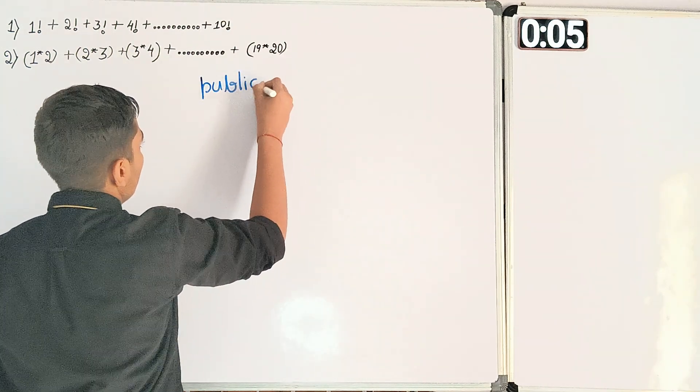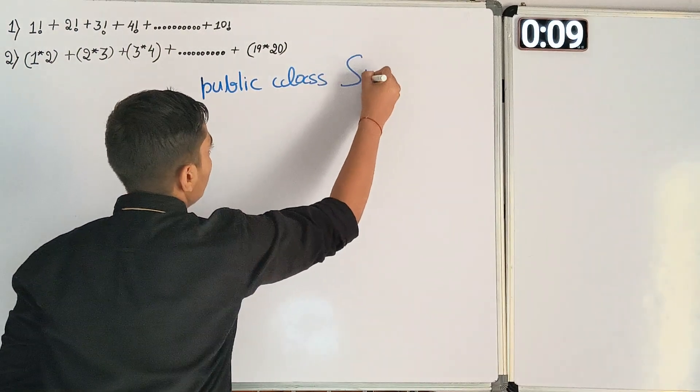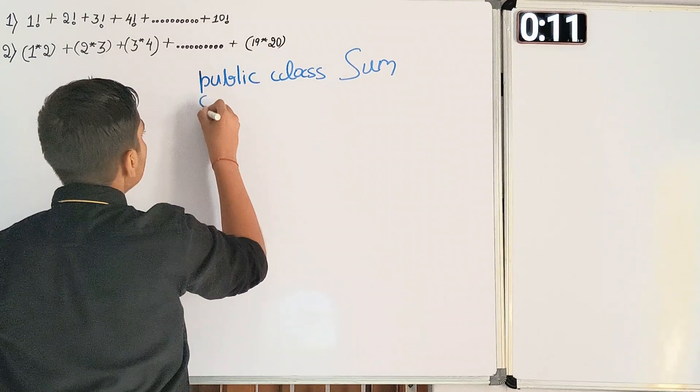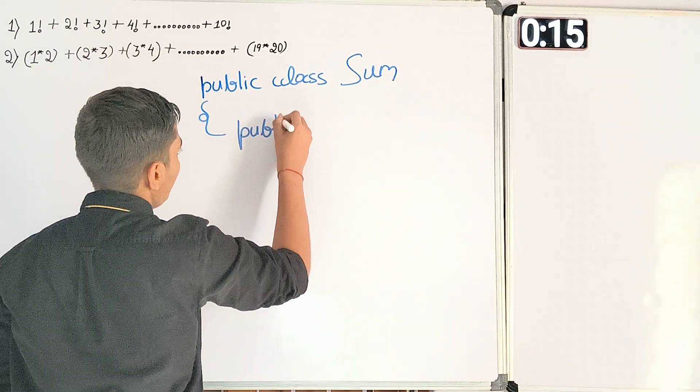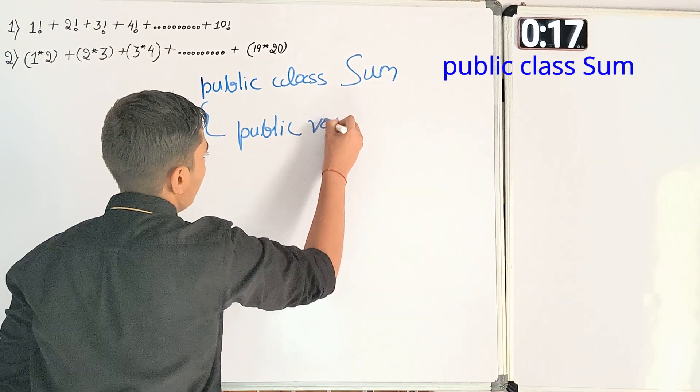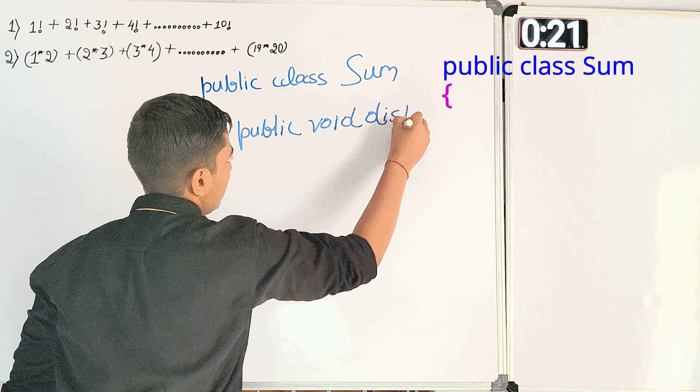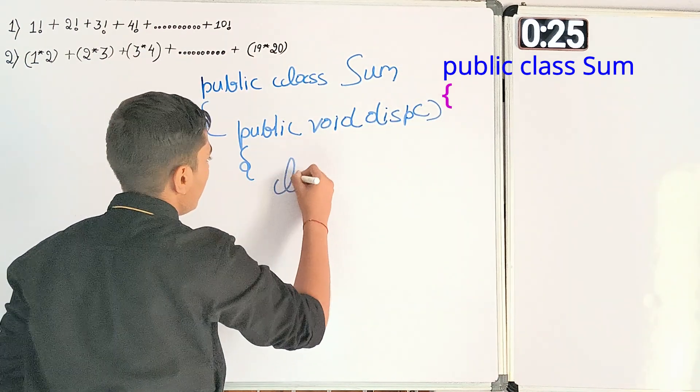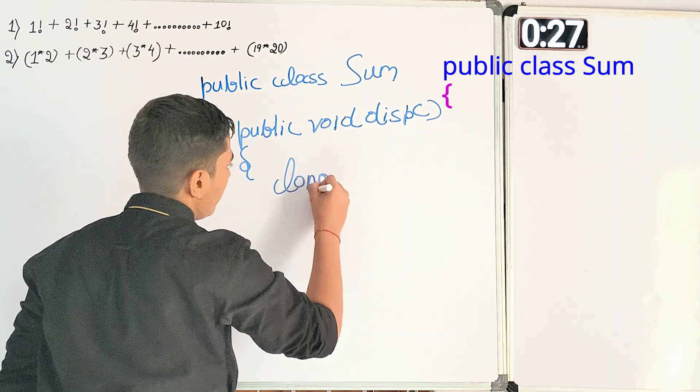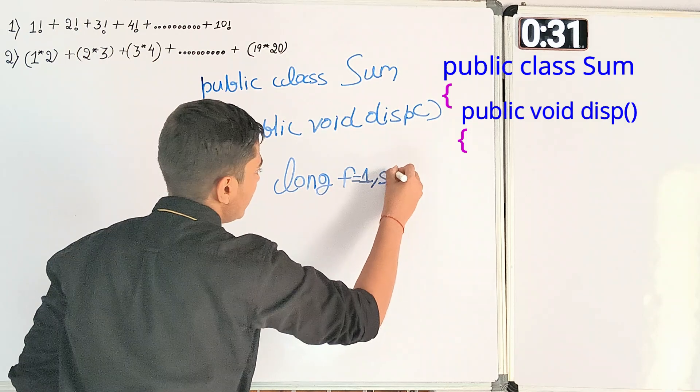Public class Sum, opening scope for class. Now public void disp as a method with empty parenthesis. Now opening scope for method and long f is equal to 1 comma, s is equal to 0.